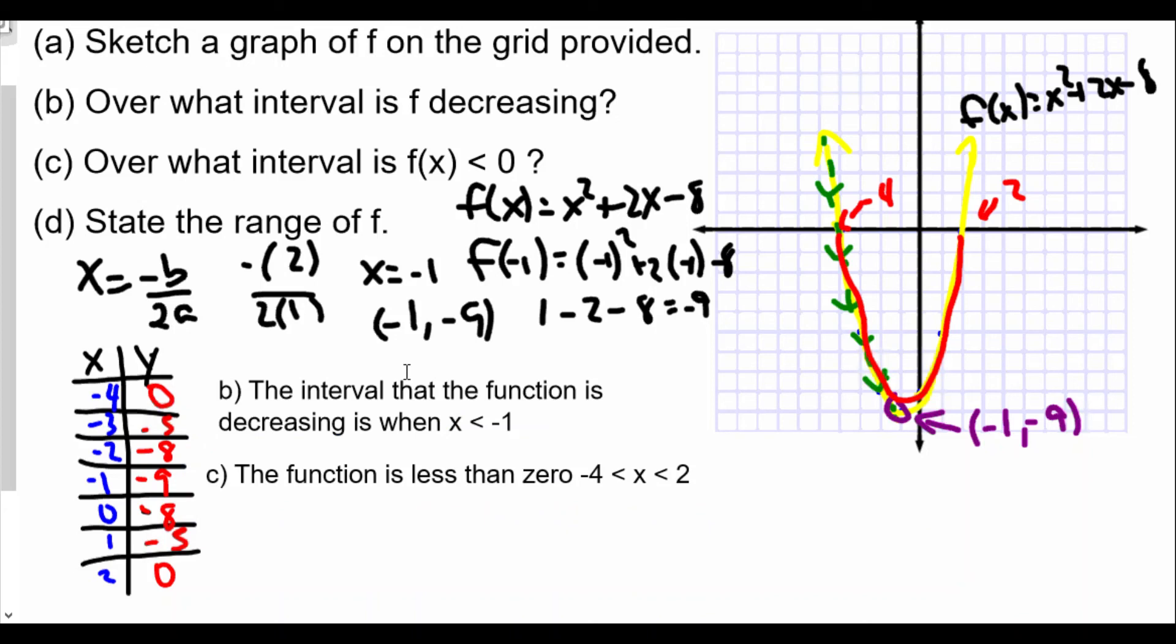And finally, state the range of the graph of f. Now, the range is all the possible y-values. And the lowest y-value, the lowest y-value we see here in the parabola is going to be -9. But notice that the rest of the graph will be at -9 or higher. So the whole graph is going to be all the y-values -9 and higher.